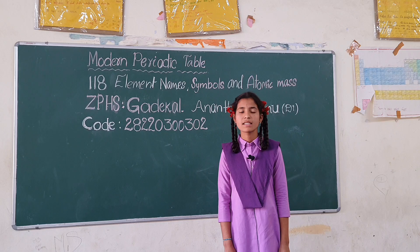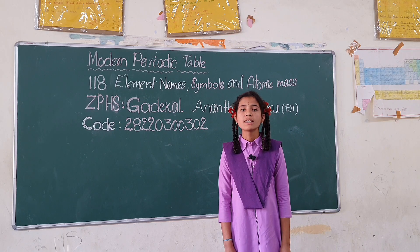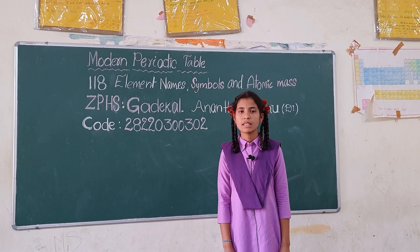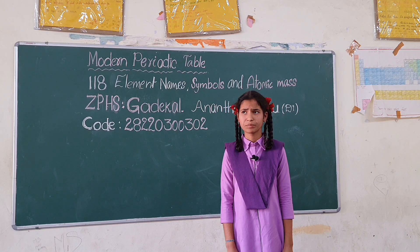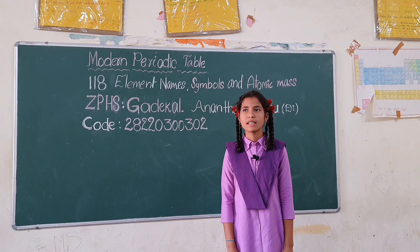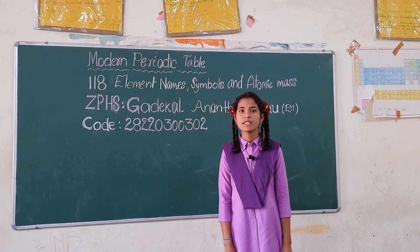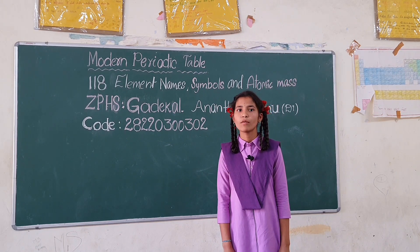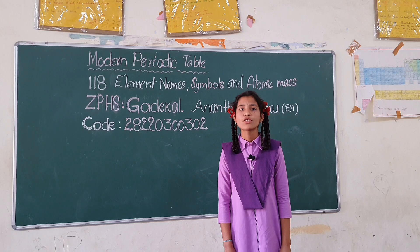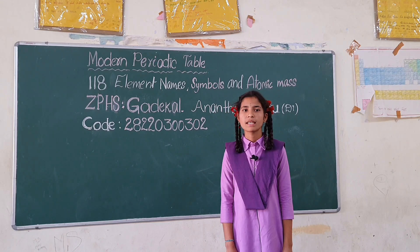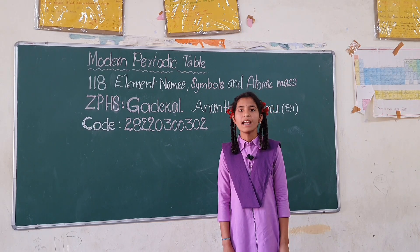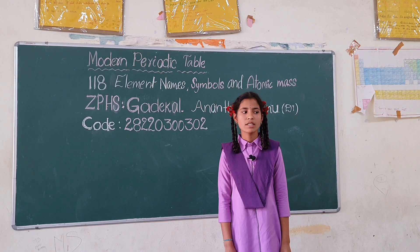Germanium Ge 72.64, Arsenic As 74.92, Selenium Se 78.96, Bromine Br 79.90, Krypton Kr 83.79, Rubidium Rb 85.47.